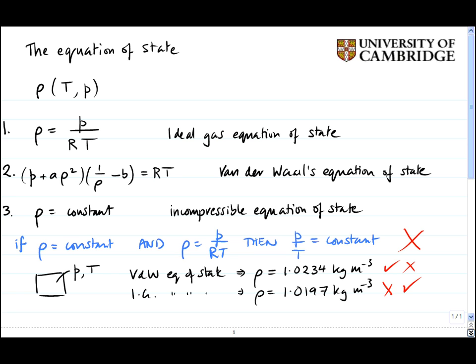So let's go back to the statement in blue. If rho is a constant and if rho equals P over RT, then strictly speaking, it's true that P over T is a constant. But are we allowed to say that rho is a constant and simultaneously rho equals P over RT?